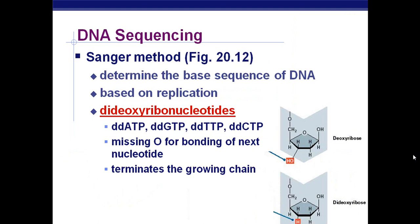The Sanger method is really the classic method for finding out the sequence of DNA. This is covered really well in your textbook figure 20-12 — that's not on your PowerPoint, but you should write that down. They do a nice job of summarizing it there. The main point is to determine the base sequence of DNA, and the way they do it is based on replication through the use of dideoxyribonucleotides.